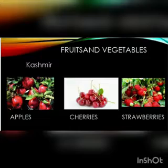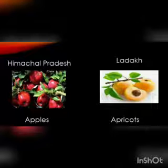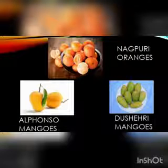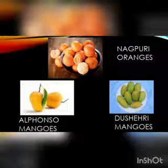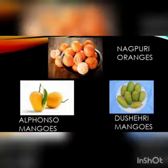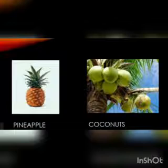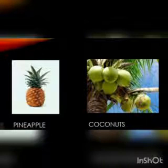Along with food grains, fruits and vegetables also form a part of an Indian meal. Different fruits grow best in different states of our country. Kashmir is famous for its apples, cherries and strawberries. Himachal Pradesh is famous for its apples and Ladakh for apricots. Nagpur in Maharashtra is famous for its oranges. The world-famous Alphonso mangoes are grown in Ratnagiri in Maharashtra and the Dasheri mangoes come from Uttar Pradesh. The pineapples grown in Assam, Goa and Kerala are really sweet. Coconuts grow in coastal areas such as Kerala and Tamil Nadu.